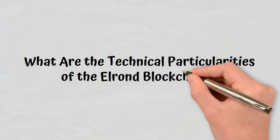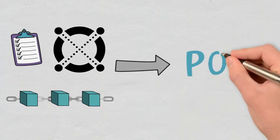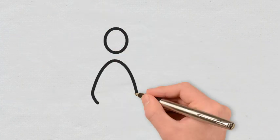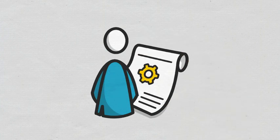What are the technical particularities of the Elrond blockchain? The consensus mechanism used for the Elrond blockchain is secure proof-of-stake. It is also compatible with smart contracts and uses Elrond virtual machine to guarantee these advantages.